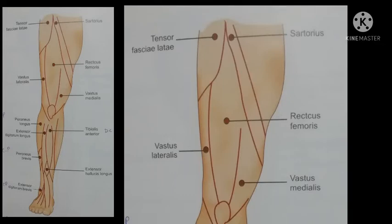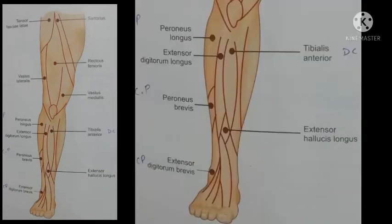To stimulate vastus medialis, the pan electrode should be on the medial thigh just above the knee. The action of vastus medialis is extension of the knee. To stimulate rectus femoris, the pan electrode should be on the middle of the thigh. The action of rectus femoris is extension of the knee.